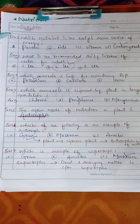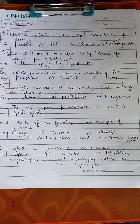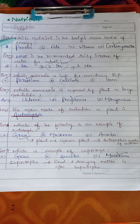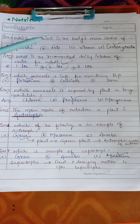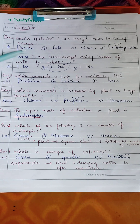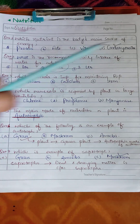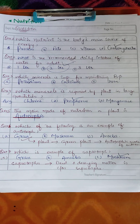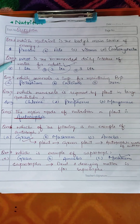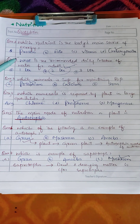Let's start some MCQs related to the topic of nutrition. Question one: which nutrient is the body's main source of energy? Options: protein, fat, vitamins, carbohydrate. The answer is carbohydrate.